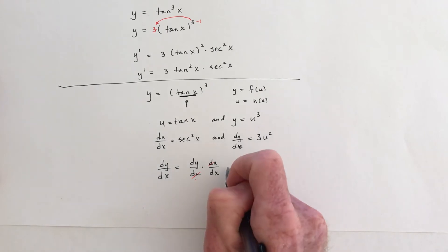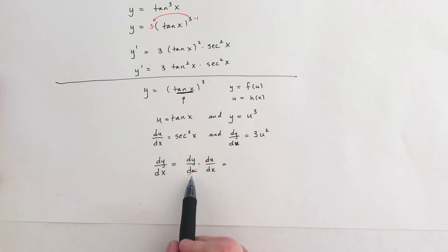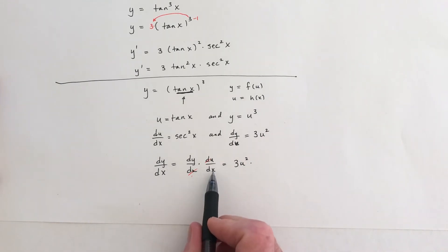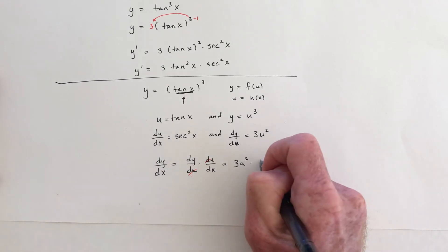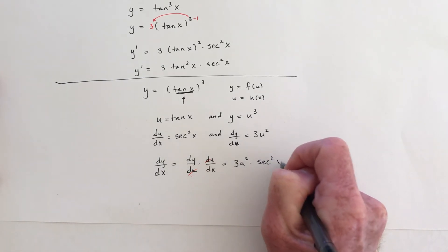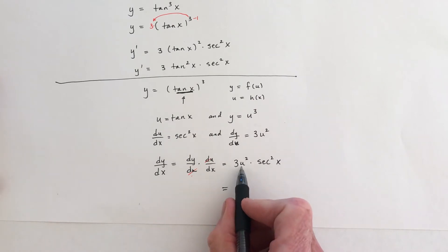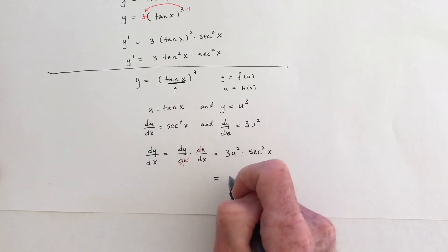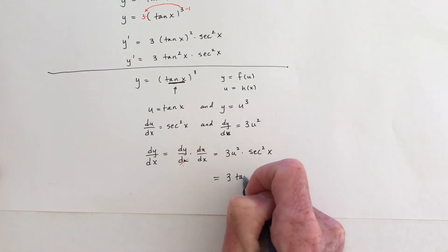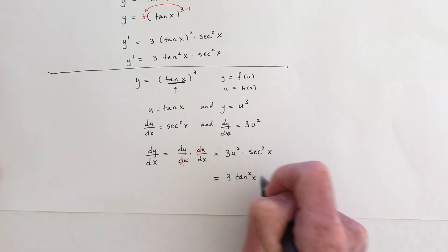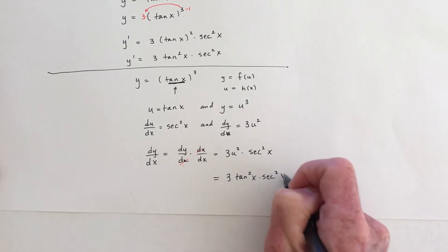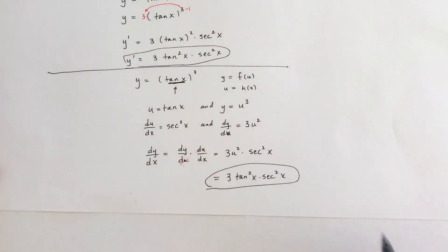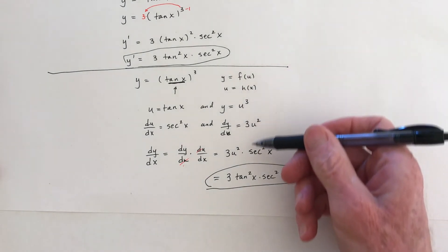They're asking you to do it in parts, so: dy/du is 3u squared, and du/dx is secant squared. Then don't leave u in your answer — replace u with what it equals, which is tangent of x. So it becomes 3 tangent squared times secant squared, and you'll see that answer is the same as before. But in the homework, they're asking you to do it this way.